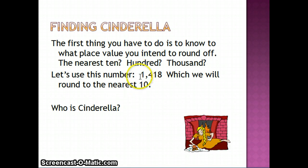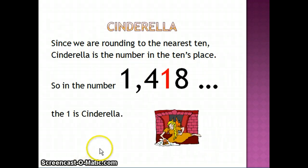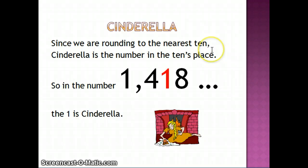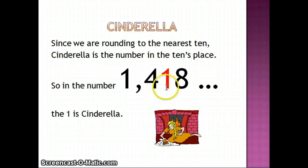Let's use the number one thousand four hundred eighteen, which we will round to the nearest ten. Who is Cinderella? Cinderella always stands in the place to which we're going to round the number. So since we're rounding to the nearest ten, Cinderella is the number in the tens place. In the number one thousand four hundred eighteen, the one is Cinderella.